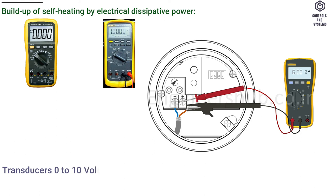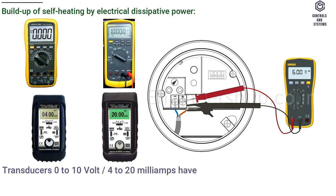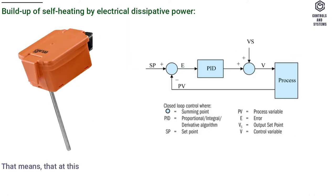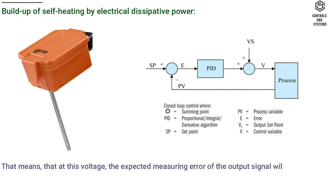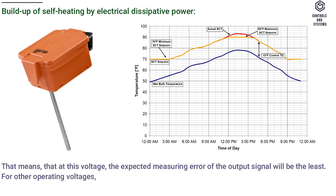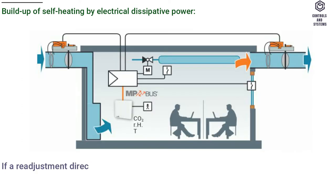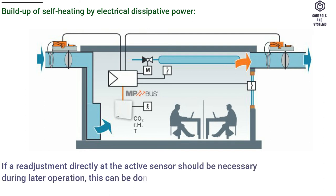Transducers 0 to 10 volt and 4 to 20 milliamps have a standard setting at an operating voltage of DC 24 volt. That means that at this voltage, the expected measuring error of the output signal will be the least. For other operating voltages, the offset error will be increased by a change in power loss of the sensor electronics. If a readjustment directly at the active sensor should be necessary during later operation, this can be done with the following adjustment methods.